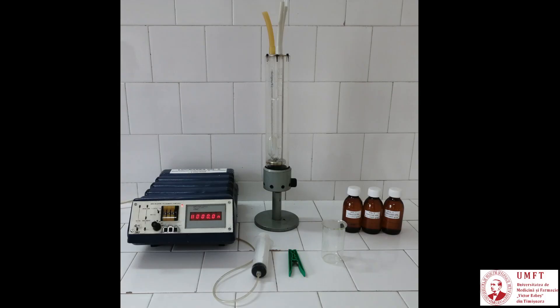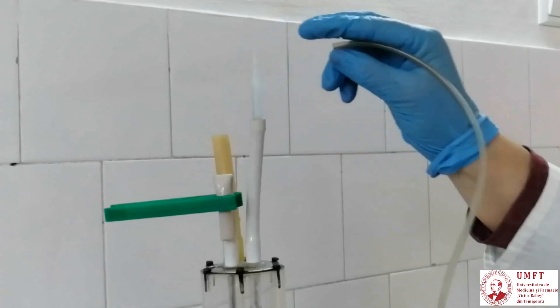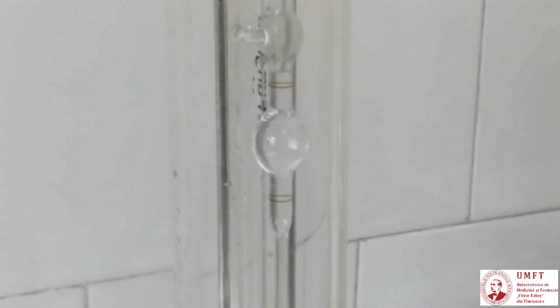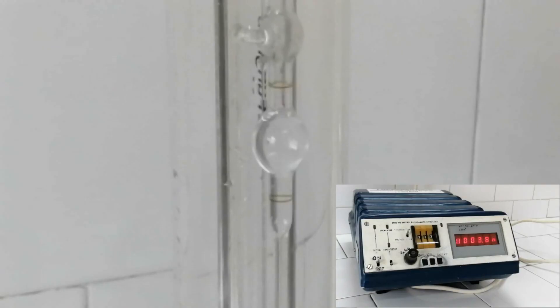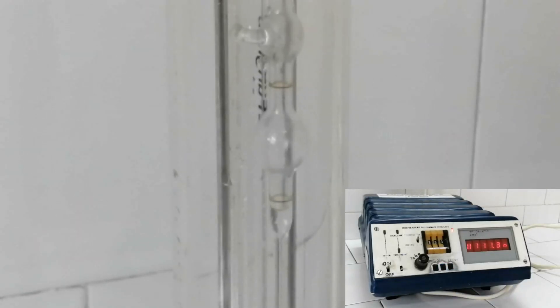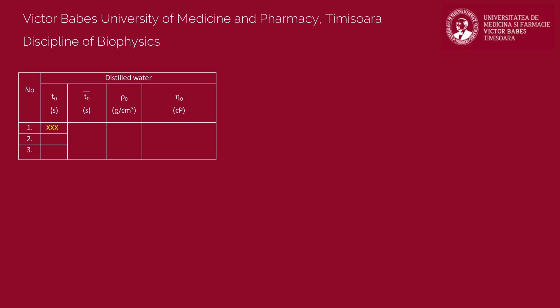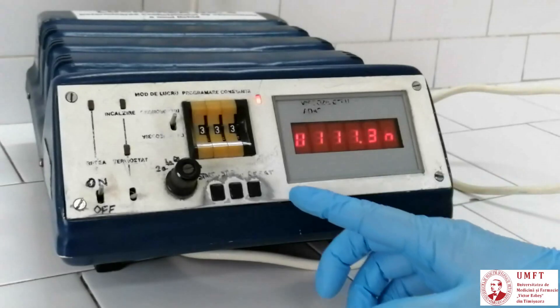First determinations will be performed for the reference liquid, which in this case is distilled water. Follow the previously mentioned steps for rising the water through the capillary tube to a level above the upper mark. Release the two branches. Press the start button to start the chronometer when the water level reaches the upper mark. Continue watching the water flow through the capillary tube. Press the stop button to stop the chronometer when reaching the lower level. Write the time of flow in the corresponding table. Reset the chronometer.